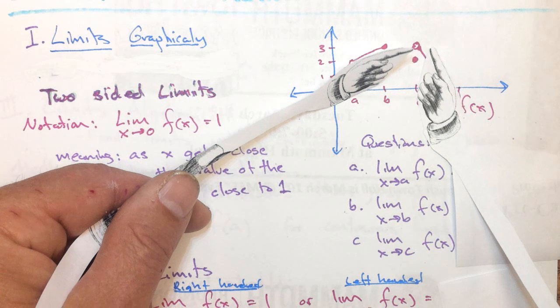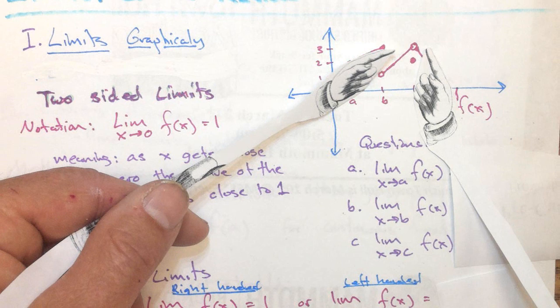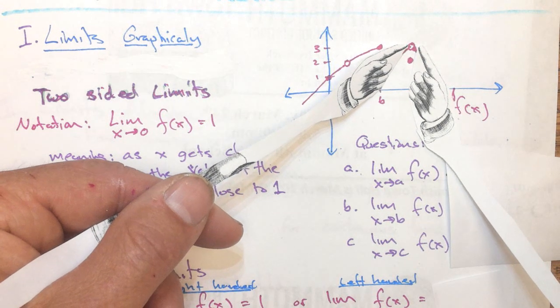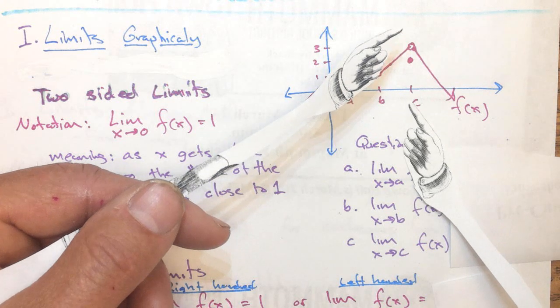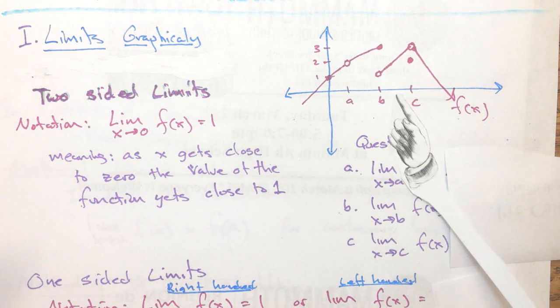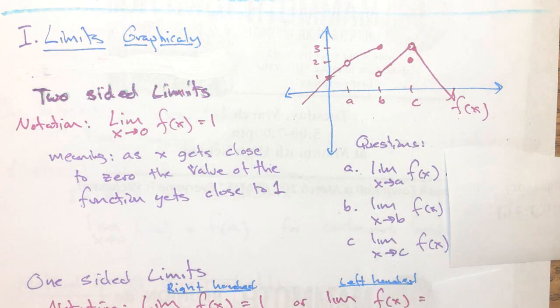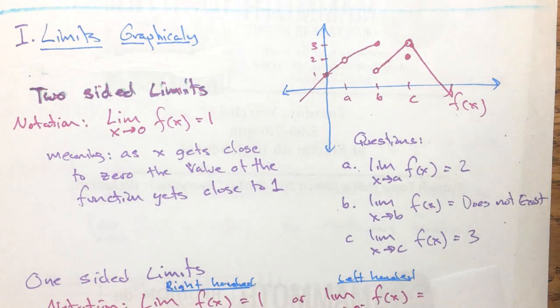It doesn't matter that the value of the function is defined differently than the limit. The limit is definitely approaching this number here. It looks like it's three. But the value of the function at c looks like it's two. So f of c equals two, but the limit as x approaches c equals three. So here's the answers for those. You can just check it out.